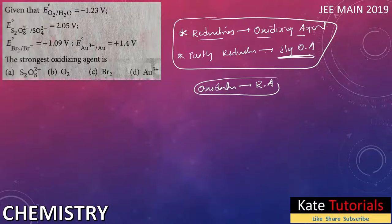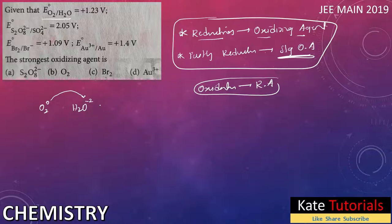They have given the E° value. For O2 to H2O, it is also reduction — because O2 has oxidation state zero, and in H2O oxygen has oxidation state minus two. So zero to minus two means reduction. The standard reduction potential given is +1.23 volts.